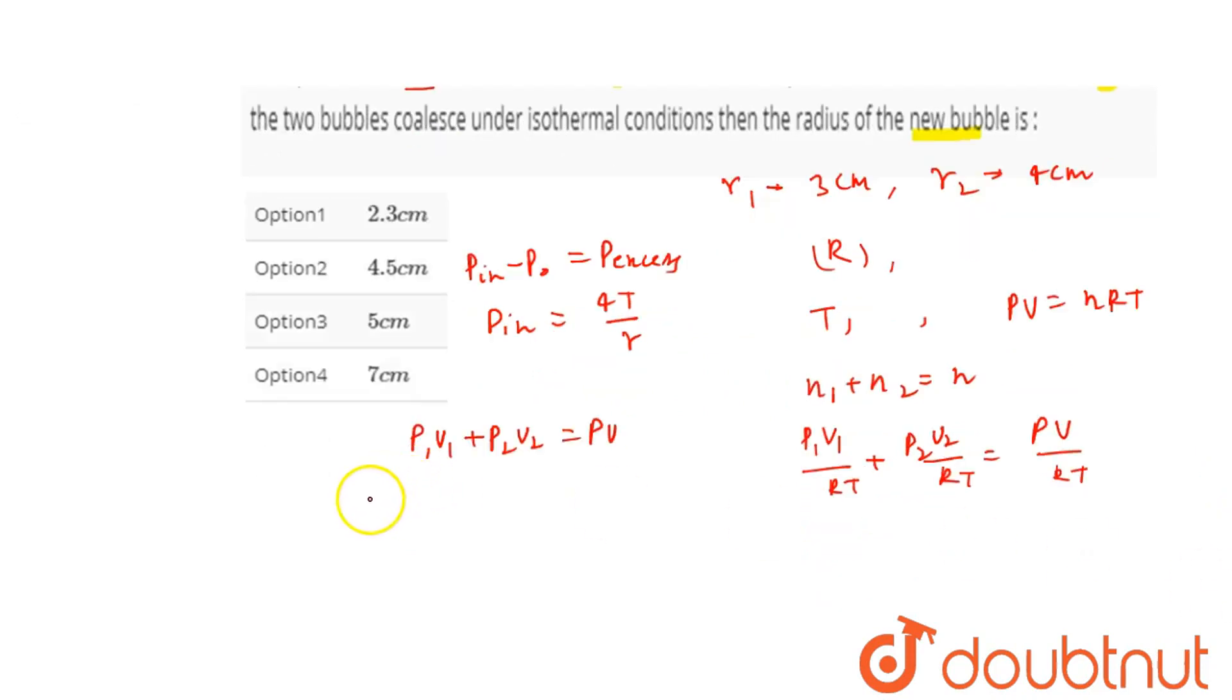So here we put the value of P. What will be the value? Here we put values. The value of 1, the radius is R1, so 4T by R1 into 4 by 3 pi R1 cube. Okay, and plus P2 will be 4T divided by R2 into 4 by 3 pi R2 cube. This will be equals to P, which will be similarly if the radius capital R, so capital R into 4 by 3 pi capital R cube.